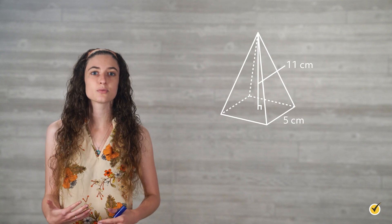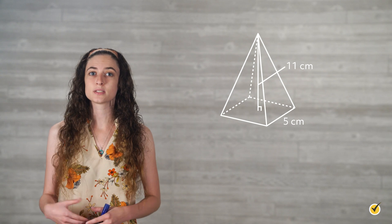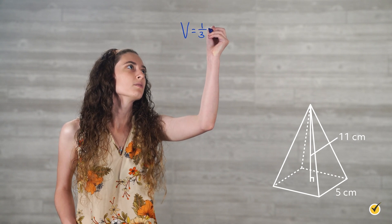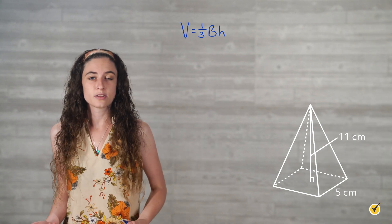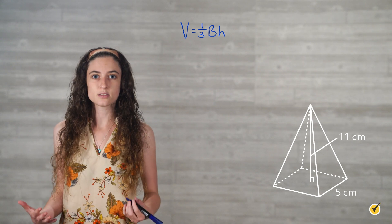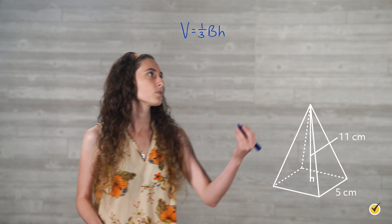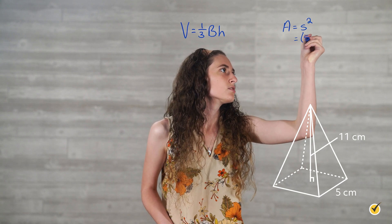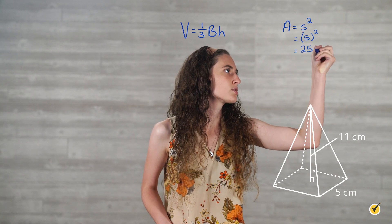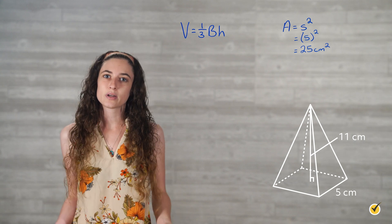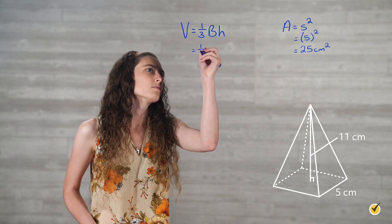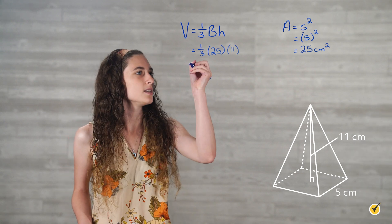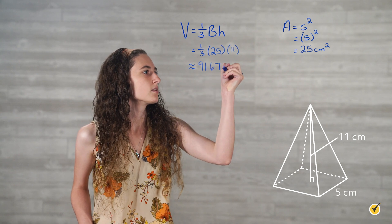Let's look at another example. Here is a pyramid with a square base with side lengths of 5 centimeters. The height of the pyramid is 11 centimeters. What is the volume of the pyramid? Our volume formula is one-third big B times the height. Since the base is a square, we use the formula s squared. With side length 5, we get 5 squared equals 25 square centimeters. Now we plug this into our formula: one-third times 25 times 11, which gives us approximately 91.67 cubic centimeters.